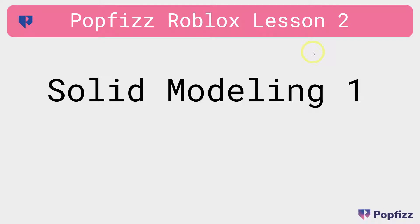Welcome to lesson two in the PopFizz Roblox course. In this lesson we're going to learn about something called solid modeling, and this is the first of two lessons. Solid modeling is just a fancy name for making your own models. We're going to take the basic shapes that Roblox gives us — the blocks, the spheres, the cylinders — and combine them to make more complex models. The first lesson today will have to do with adding models together, and lesson three will have to do with subtracting pieces in order to get models.